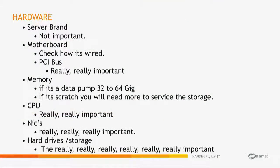System selection — this is where it gets a bit hardware-focused. Server brands are not important. Motherboards and PCI buses are important. CPUs are really important. NICs are really, really, really important. Hard drives are super important — whether it's your SAN performance if you're proxying through a DTN, or writing to scratch on the local DTN. Check the wiring diagrams of how servers are actually wired inside, because you'll be surprised how many times an X16 port is actually wired at 8 or 4, and you plug it in and wonder why it's going slow.